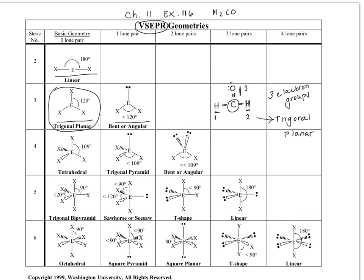Since we know it's trigonal planar, the best way to draw this is where you have a 120 degree bond angle from your hydrogen to your oxygen. So this is 120 degrees. Before VSEPR theory we had the previous structure, but now with VSEPR theory, this is the appropriate structure.